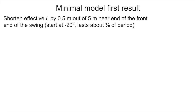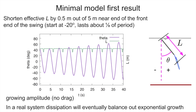For my first result from this minimal model, I didn't even make an animation — I just ran a simulation where I shortened the effective L by half a meter out of five (so delta L was 10%), near the end of the front part of the swing, starting at 20 degrees to the left of vertical, lasting about one-eighth of the oscillation period. In green is the length of the pendulum line — you can see it's fixed, then drops, then extends, repeating. In purple is the instantaneous angle, which oscillates: it starts at 40 degrees, but each oscillation period the amplitude grows larger and larger, reaching up to 65 degrees after seven or eight oscillations. Without drag, in a real system dissipation would balance out the exponential growth so you can't swing infinitely high.